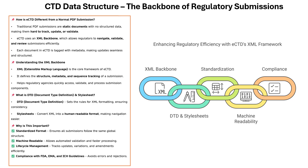Now let's talk about CTD data structure — the backbone of pharma submissions. Submitting a messy stack of PDFs? Health authorities will say no thanks. With ECTD, it is all digital, organized and easy to track. At its core, ECTD uses an XML backbone — think of it as a digital map that defines structure, tracks updates and organizes your submission. Then there is DTD (document type definition) and stylesheets. DTD sets the rules making sure everything is formatted correctly, while stylesheets turn the data into a clear, readable format for regulators like FDA and EMA. ECTD means faster review, fewer errors and smoother approvals.